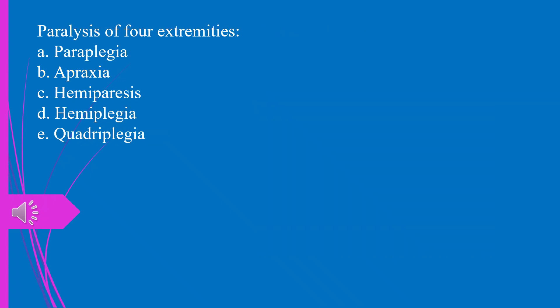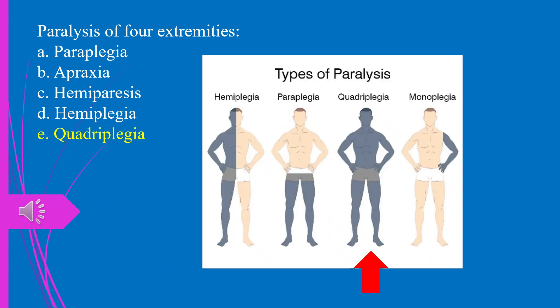Question 12. Paralysis of four extremities: a) paraplegia, b) apraxia, c) hemiparesis, d) hemiplegia, e) quadriplegia. The answer is e, quadriplegia.